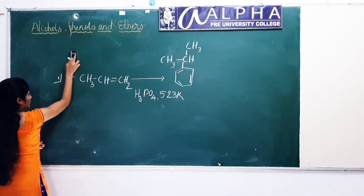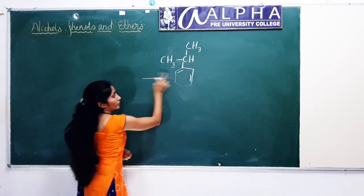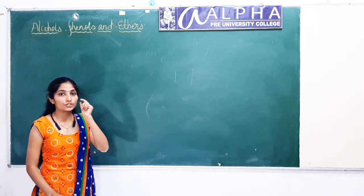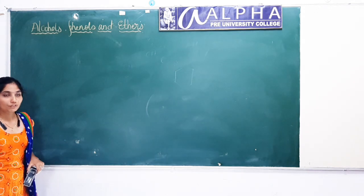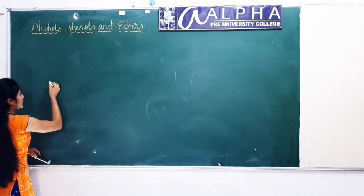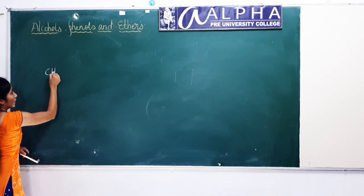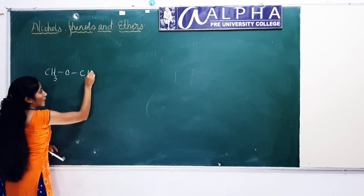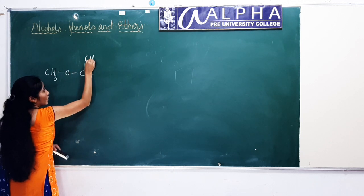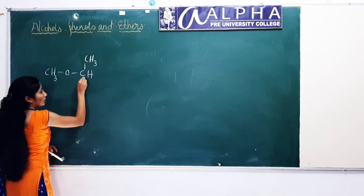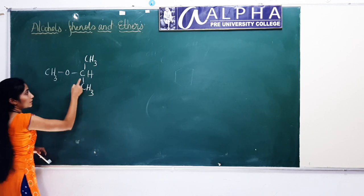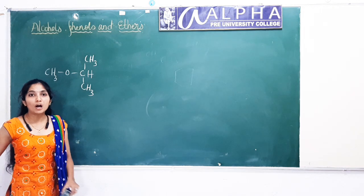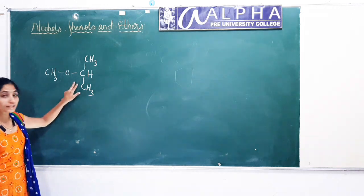Next, in the nomenclature of ethers, I haven't discussed branched ethers. I will give examples for that. Consider an ether: CH₃–O–CH(CH₃)–CH₃. What is the IUPAC name? How will you name this compound?